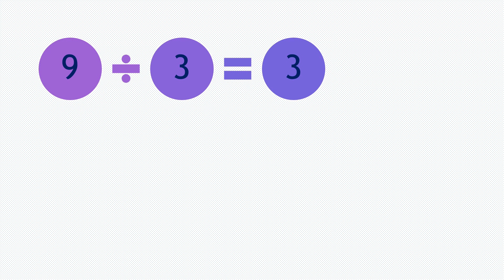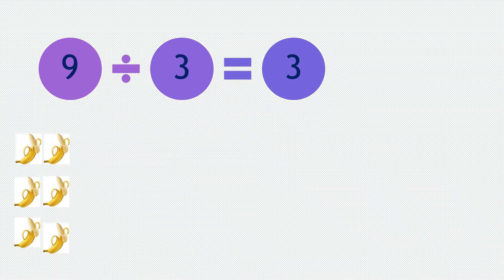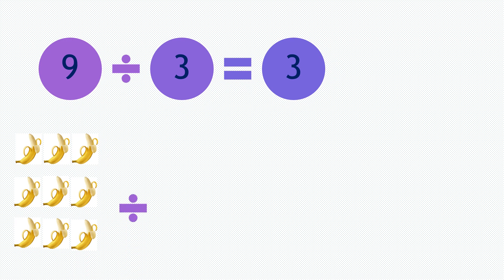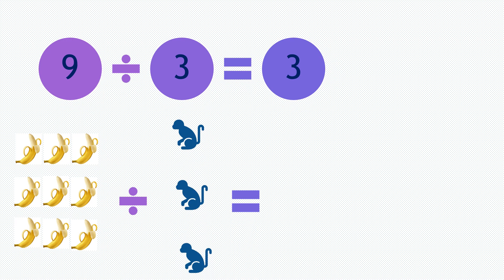Moving on to our next question. 9 divided by 3 equals 3. So if we have 9 bananas — 1, 2, 3, 4, 5, 6, 7, 8, 9 — and divided by 3 monkeys, each monkey will receive 3 bananas: 1, 2, 3.